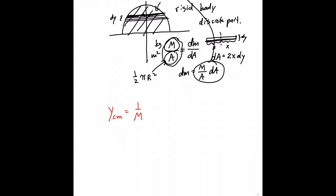So let's rewrite the formula. y times m over A times dA, but again I make another substitution and replace dA with 2x dy.